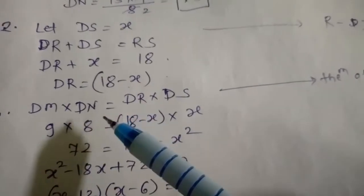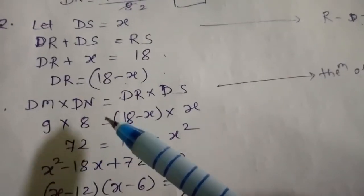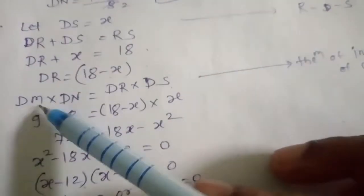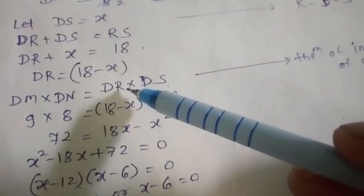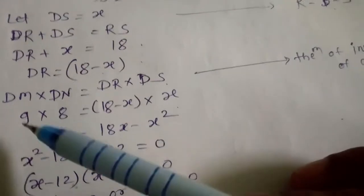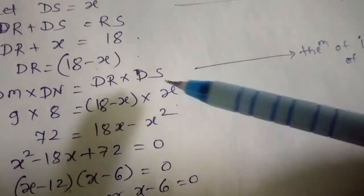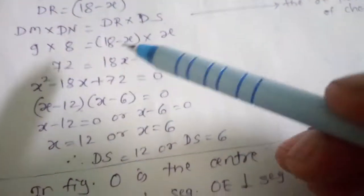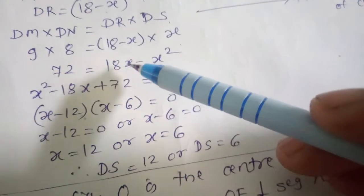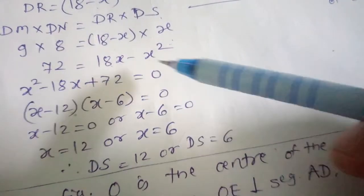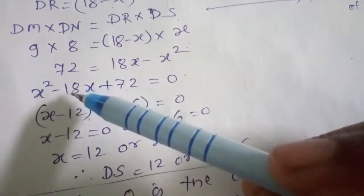Again applying the theorem of internal division of chords: DM × DN = DR × DS. So 9 × 8 = (18 − x) × x, giving 72 = 18x − x². Rearranging: x² − 18x + 72 = 0. We need factors of 72 whose sum is 18, which are 12 and 6.